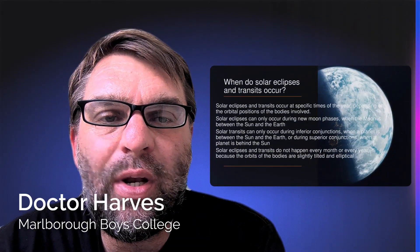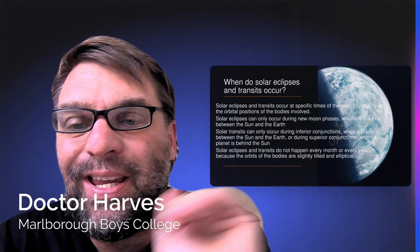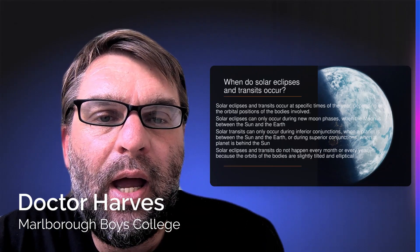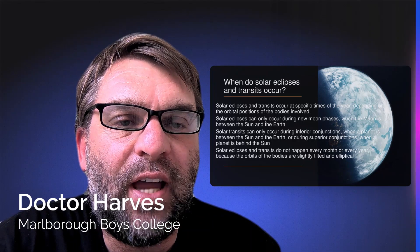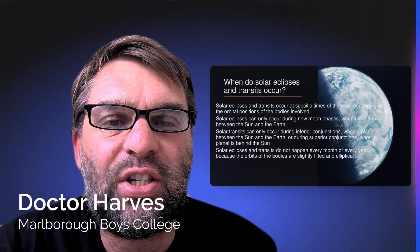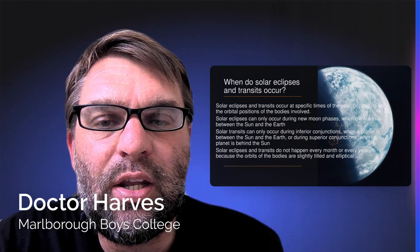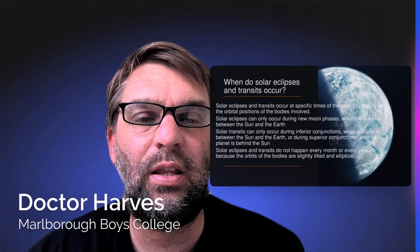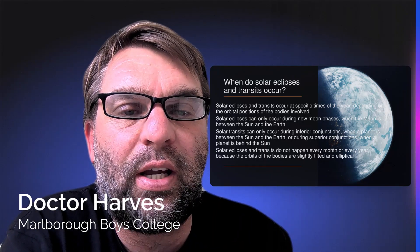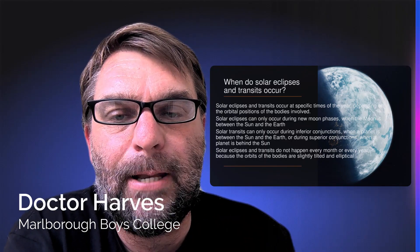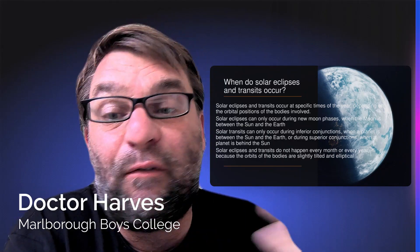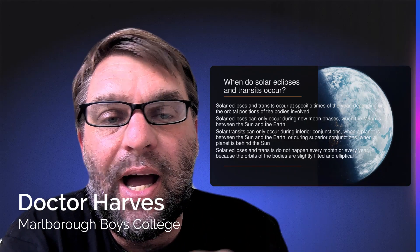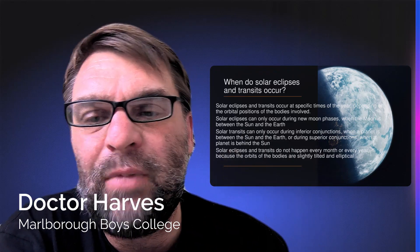So when do these occur? Solar eclipses, due to the need to be in syzygy, occur at specific times of the year due to the need for that orbital — that straight line — overlap. Solar eclipses only occur in New Moon phases, when the Moon is between the Sun and the Earth. Solar transits can only occur during inferior conjunctions, when a planet is between the Sun and the Earth, or during superior conjunctions, when a planet is behind the Sun. They do not happen every month or every year, because the orbits of these celestial objects are always elliptical, not completely circular, and always slightly tilted.